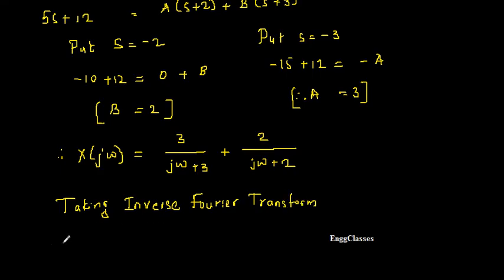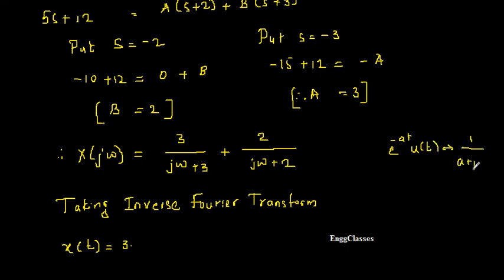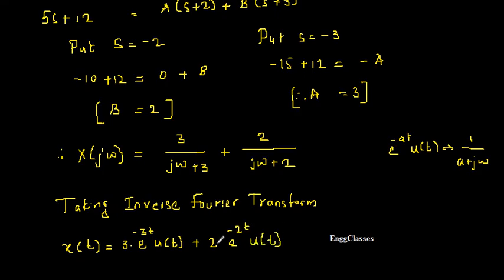Taking the inverse Fourier transform: the standard pair is that the Fourier transform of e^(−at)u(t) is 1/(a + jω). So 3/(jω + 3) gives 3·e^(−3t)u(t), and 2/(jω + 2) gives 2·e^(−2t)u(t). Therefore x(t) = 3e^(−3t)u(t) + 2e^(−2t)u(t). This is the final answer.